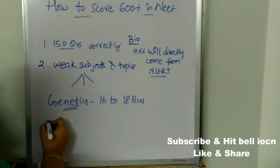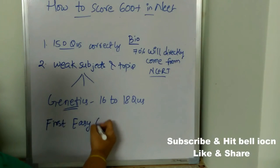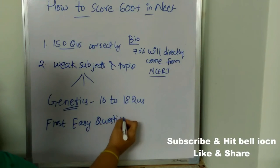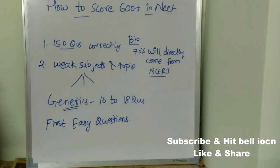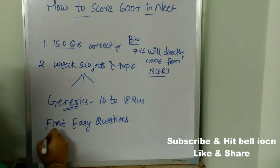Coming to the exam, first start solving easy questions. All questions carry equal marks, so start with easy ones — nobody cares whether you solved easy or difficult questions; what matters is getting a good score in NEET. Also concentrate on high-weightage topics across Physics, Chemistry, and Biology, as these will help you score 600 plus marks.